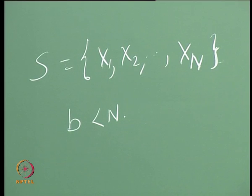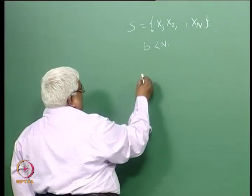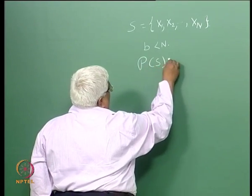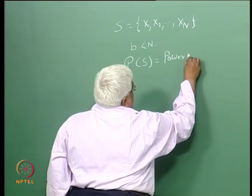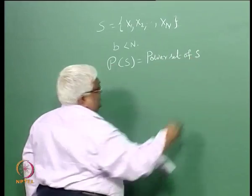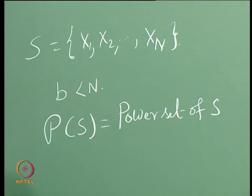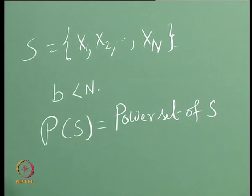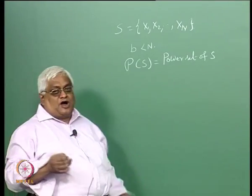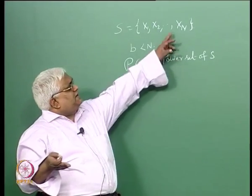Now we need to define a function J. The meaning of defining a function J is the following: let us look at what is known as the power set. Power set means the set of all subsets. So I am looking at the power set of S. How many elements are there in the power set of S? Two to the power capital N.